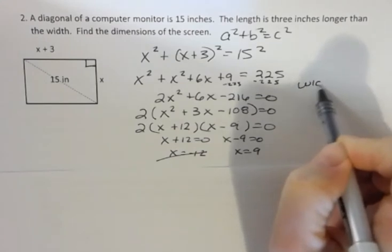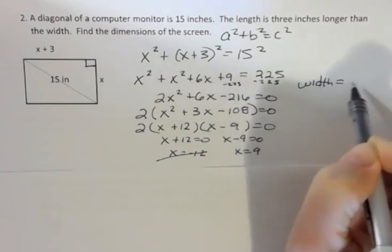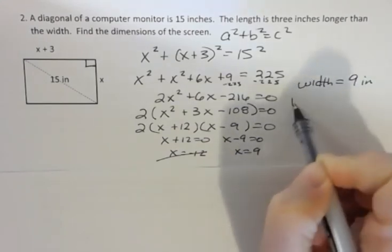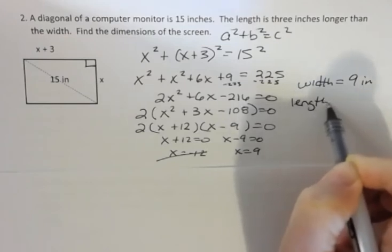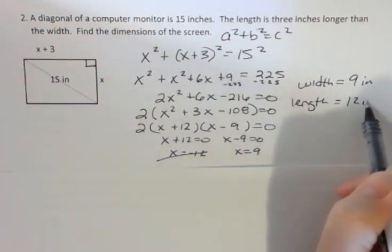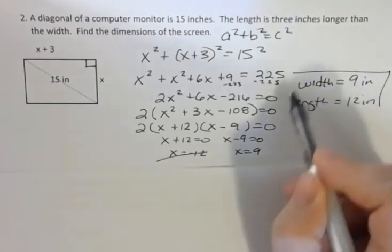Well no length of a side can be negative so that doesn't make sense. So that means that the width is 9 inches and the length is 3 inches more than that which is 12 inches. So there's that one.